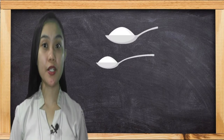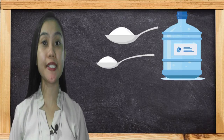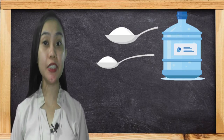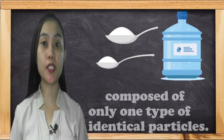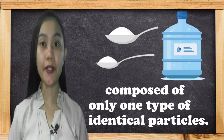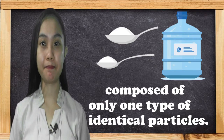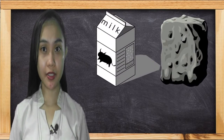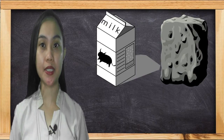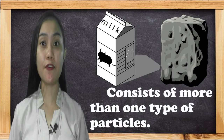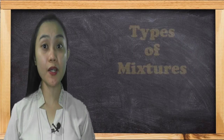Both sugar and distilled water are considered pure substances because each of them is composed of only one type of identical particles. Both milk and concrete are considered mixtures because each of them consists of more than one type of particles.